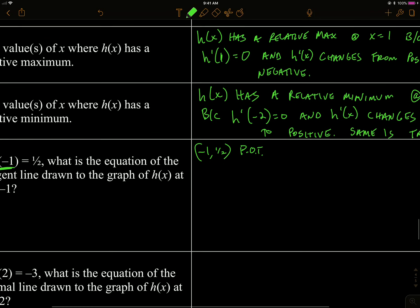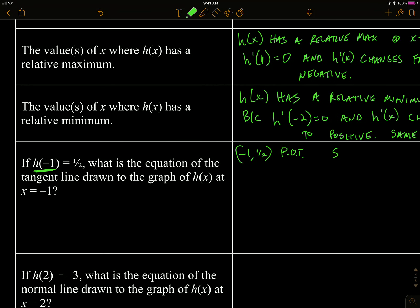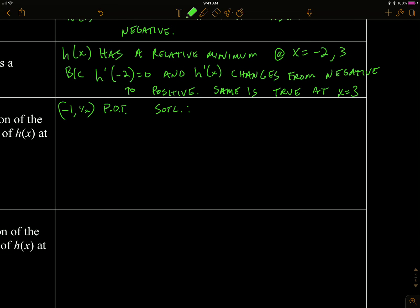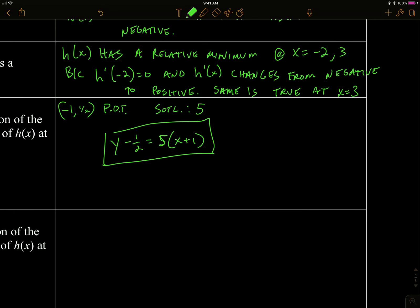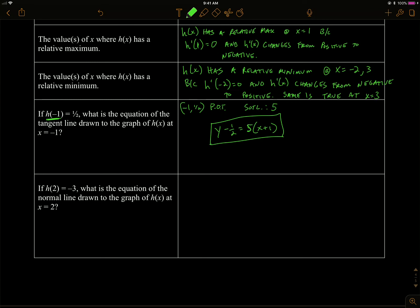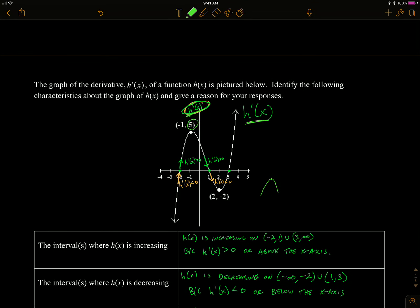They tell us h of negative one equals one half, so the point of tangency on h is negative one, one half. They want the equation of the tangent line at x equals negative one. We look at our graph of h prime: at x equals negative one, the y value is five. Since y on the h prime graph is the derivative — the slope of the tangent line — the slope is five. The equation is y minus one half equals five times x plus one.